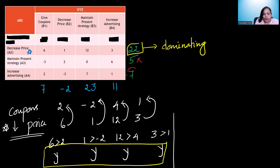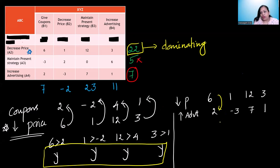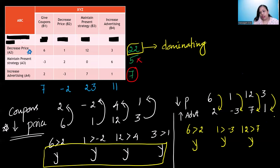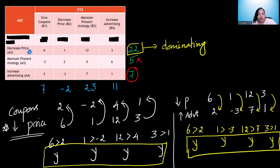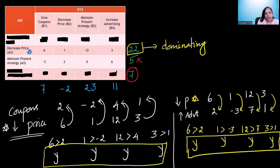We check the next comparison. Is 6 > 2? Yes. Is 1 > -3? Yes. Is 12 > 7? Yes. Is 3 > 1? Yes. All yes — wherever all answers are yes, that strategy is inferior to the other. So decreasing price is superior to increasing advertising. We eliminate the increasing advertising strategy. We are left with decreasing price and maintaining present strategy for ABC.